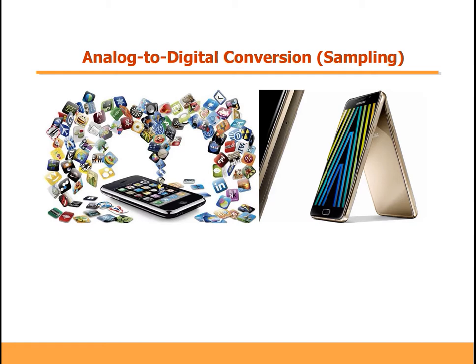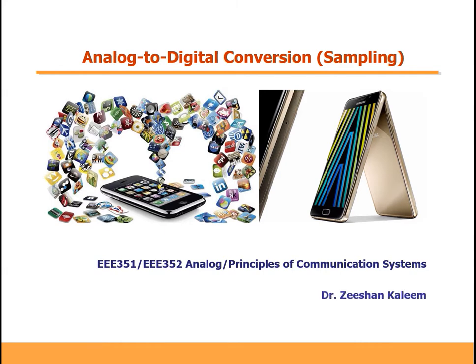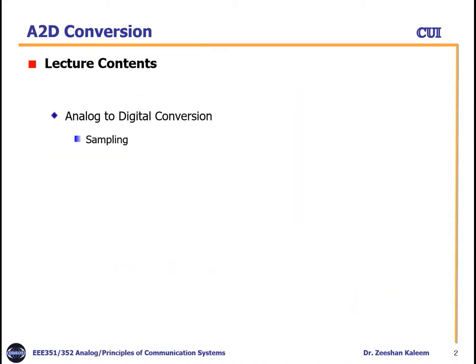Bismillahirrahmanirrahim. Today's topic is analog to digital conversion, and specifically we will focus on sampling. The course title is 883513 52 Analog — Principles of Communication Systems. I am Dr. Dishan Kaleem from CUI UR campus. In this video we will cover analog to digital conversion. There are three main steps: first is sampling, second is quantization, and third is encoding. In this video we will only focus on sampling.